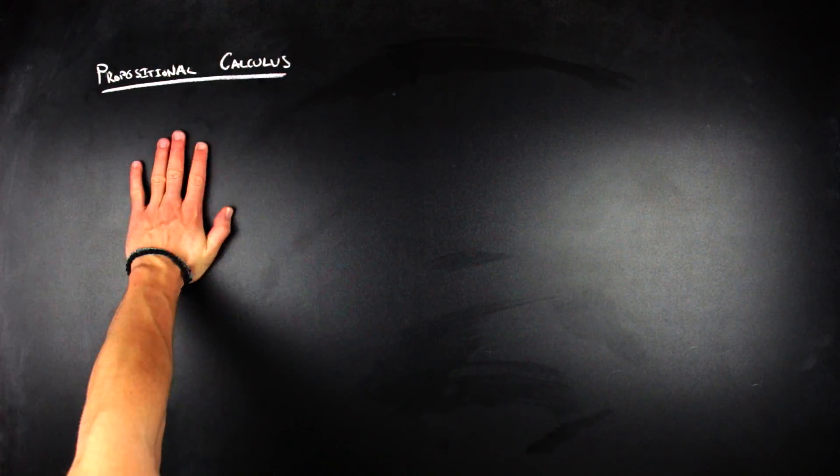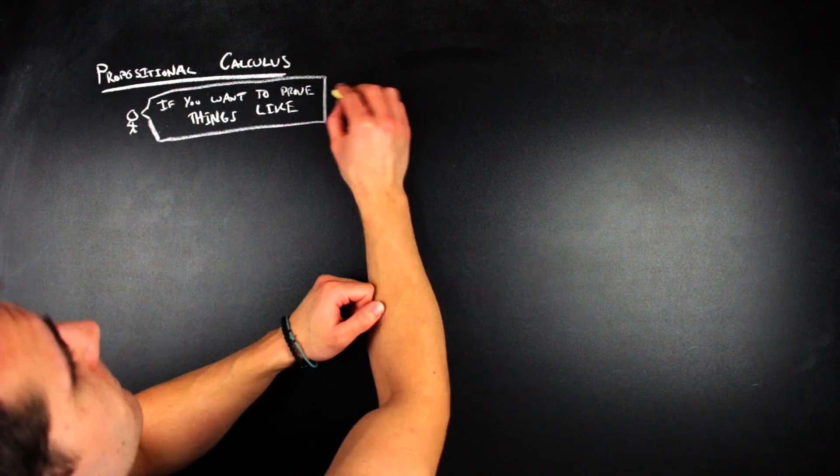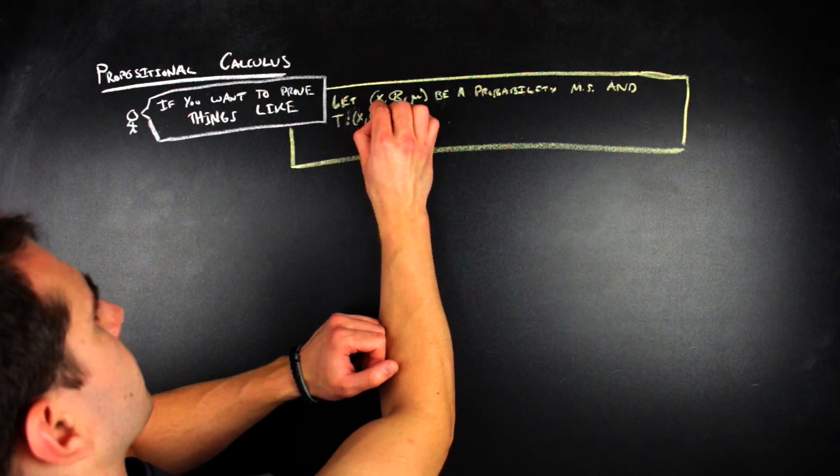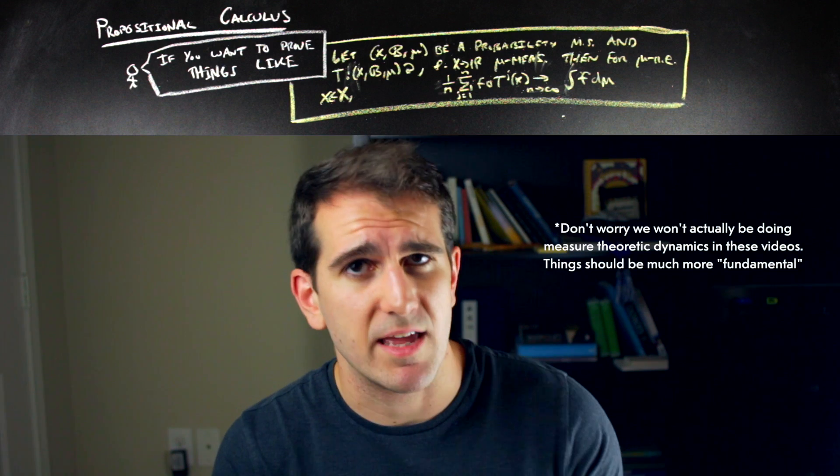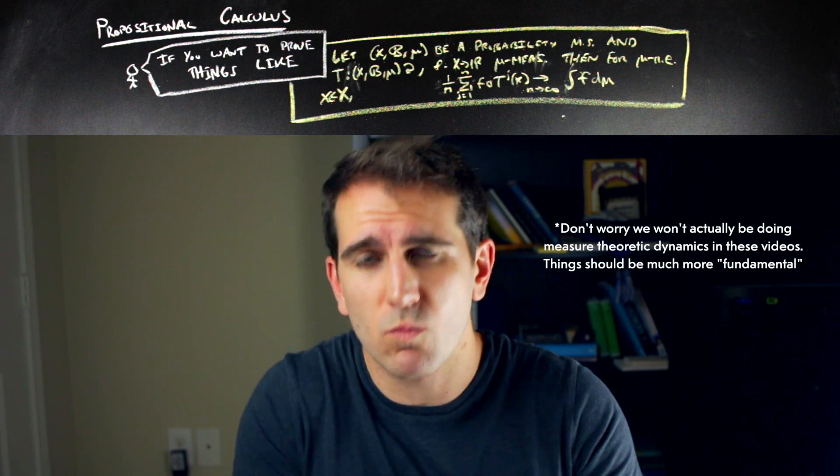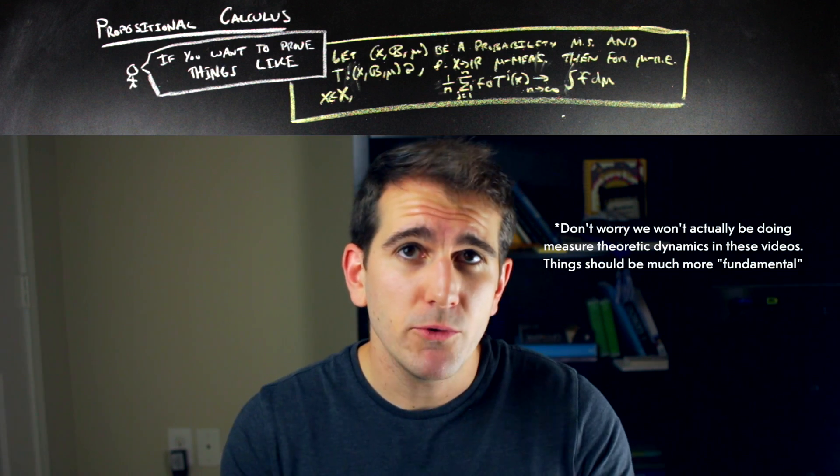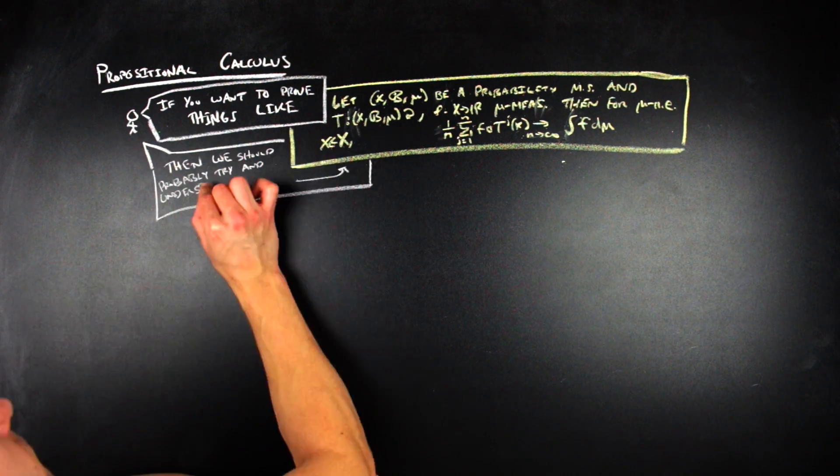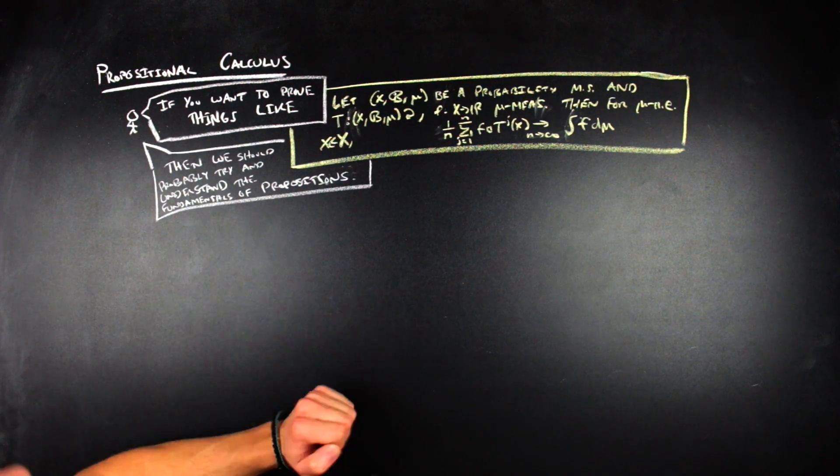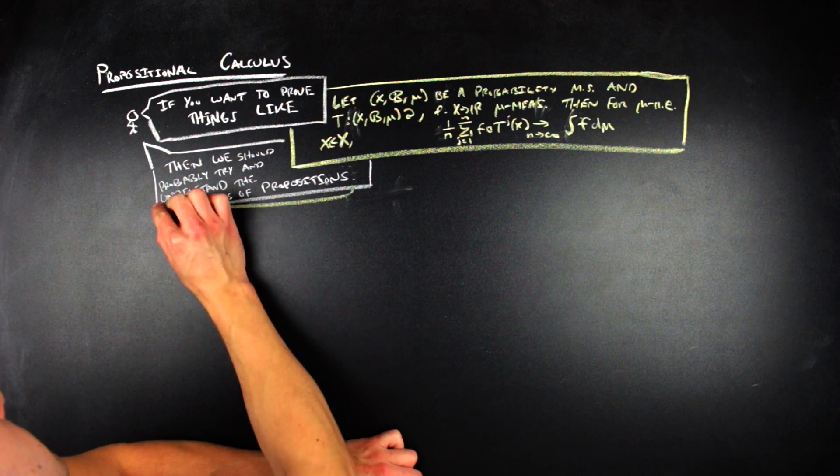For example, if you have a statement like this one from Measure Theoretic Dynamics, how do you prove that thing? Well, you would write a proof, but in order to write a proof, you need to understand how do statements actually interact with each other. And this brings us to the idea of propositional calculus.